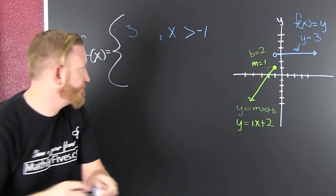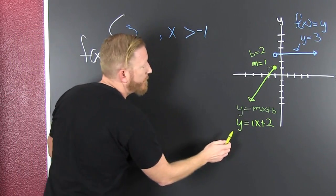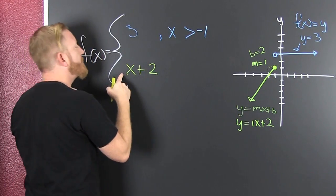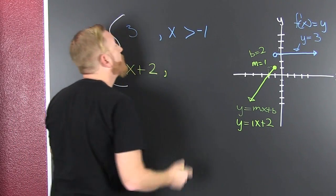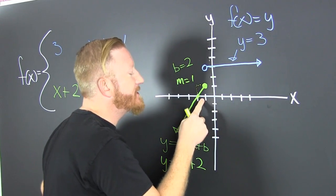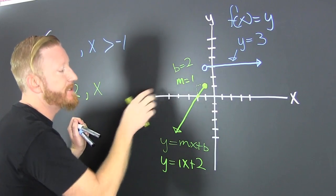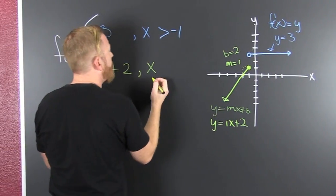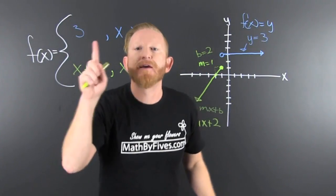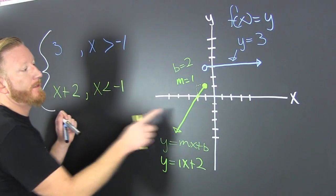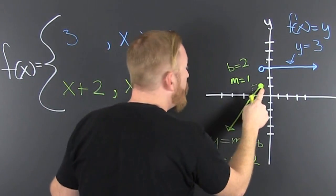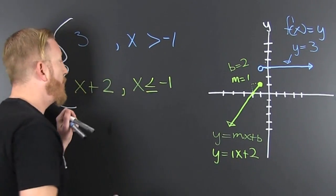Now we put our yellow piece. Our yellow piece — boom — f of x is the function formally known as y, so f of x is equal to x plus two. I didn't write the one because it's redundant. That's when x is smaller than minus one — all of these x's make that happen. Now, who owns minus one? You can tell which one owns the endpoint by open dot and closed dot. The open dot is just the bigger than. The closed dot, that's the smaller than or equal to.